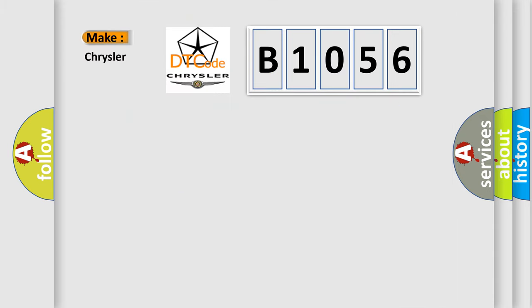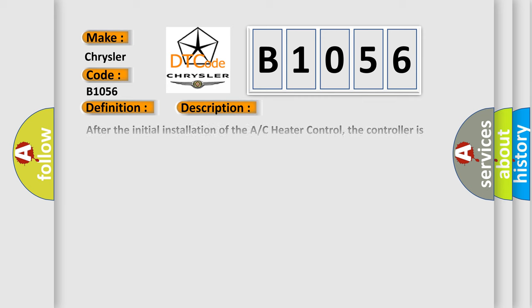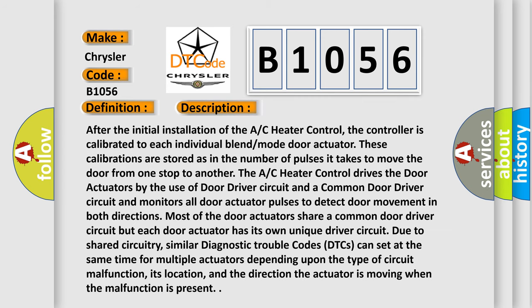The number itself does not make sense to us if we cannot assign information about what it actually expresses. So, what does the diagnostic trouble code B1056 interpret specifically for Chrysler car manufacturers? The basic definition is: rear blend door travel range too small. Here is a short description of this DTC code.